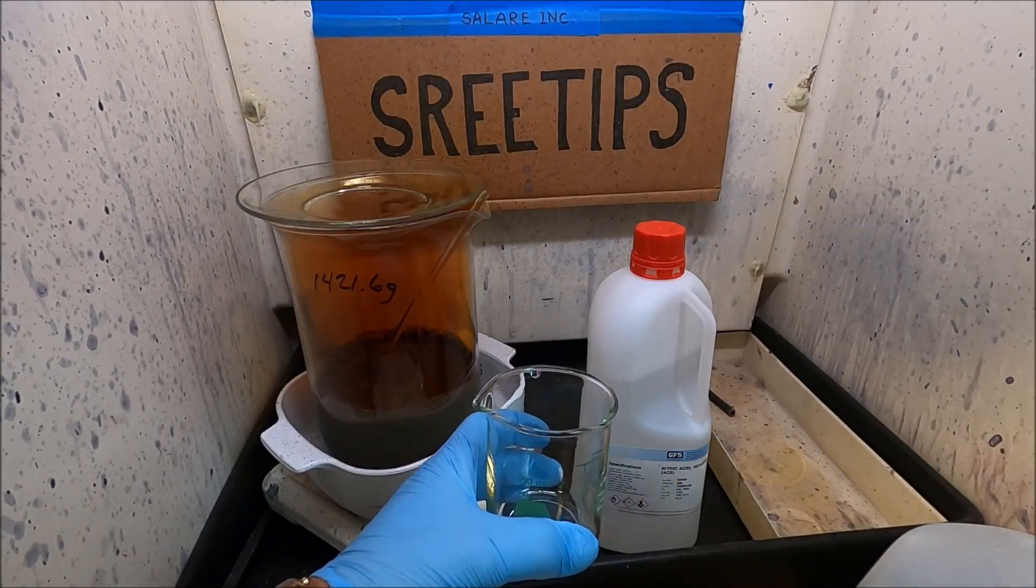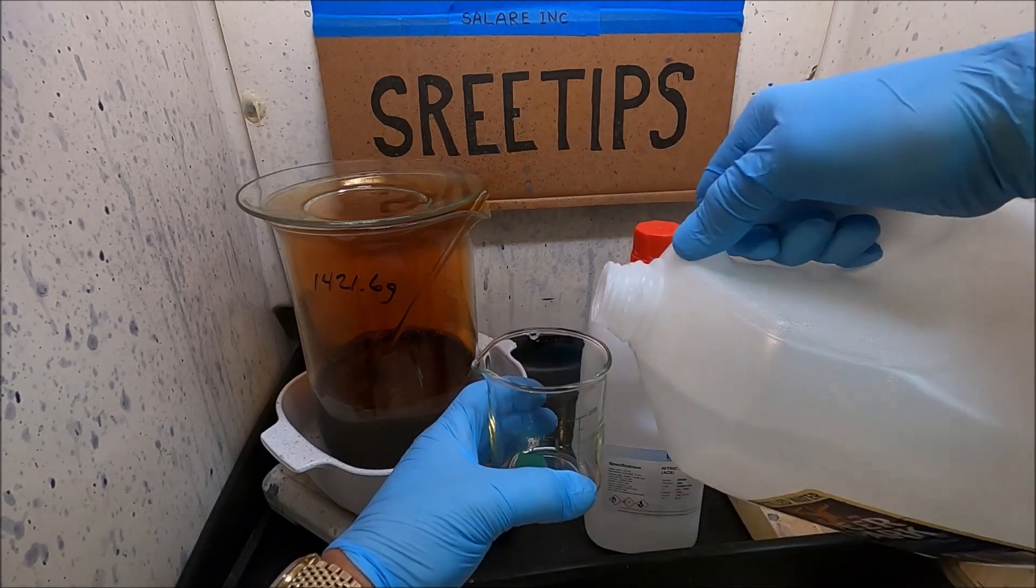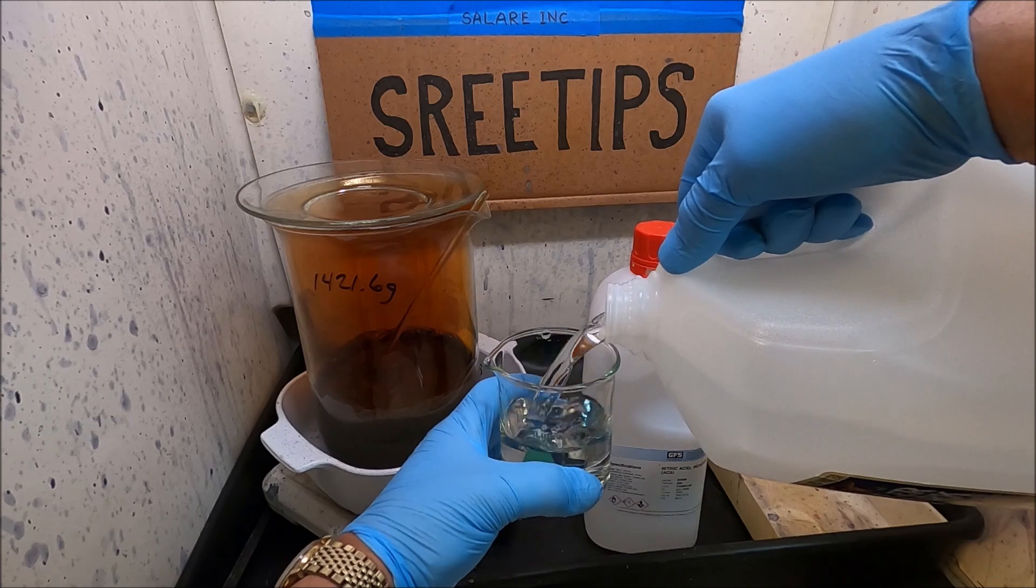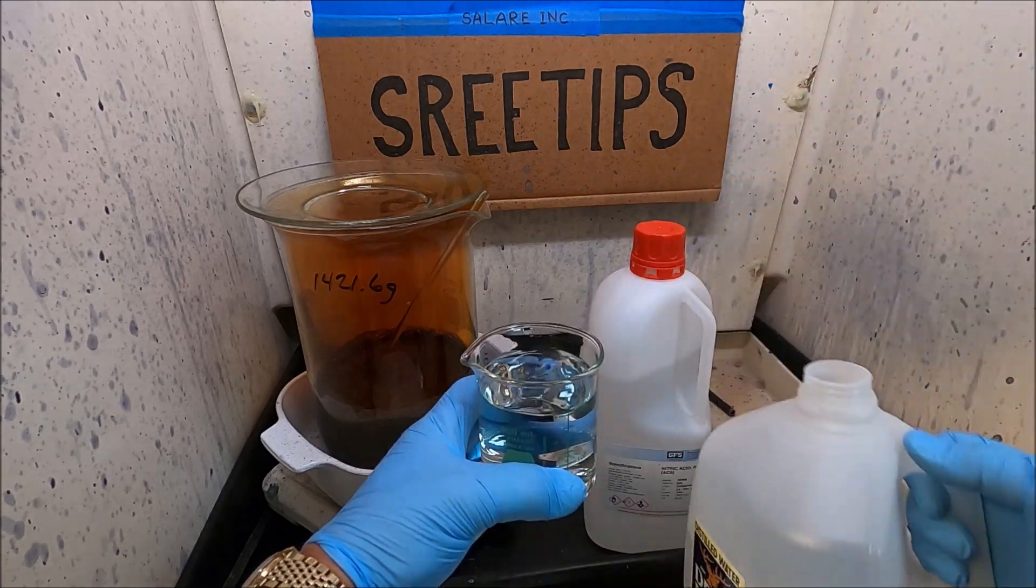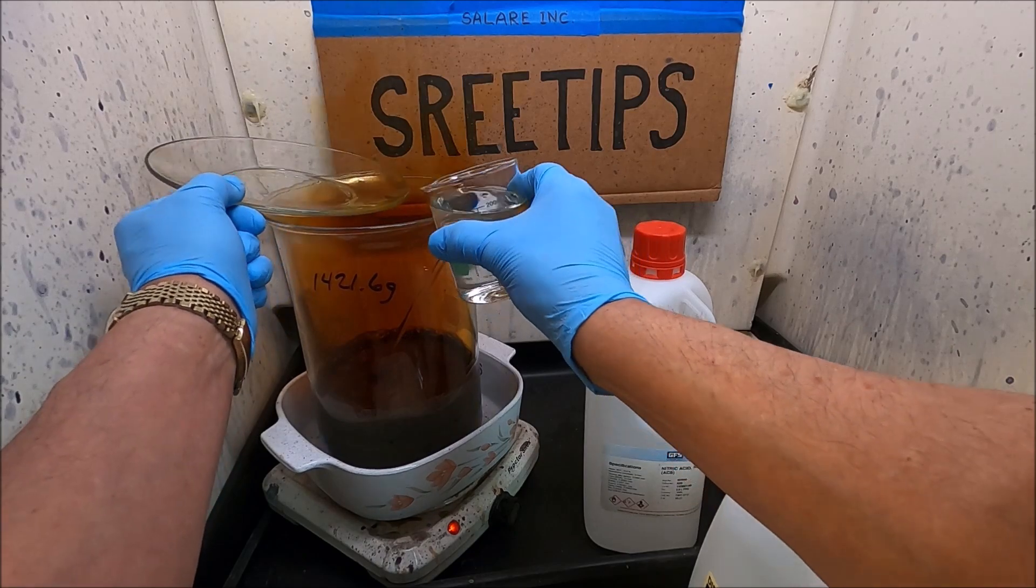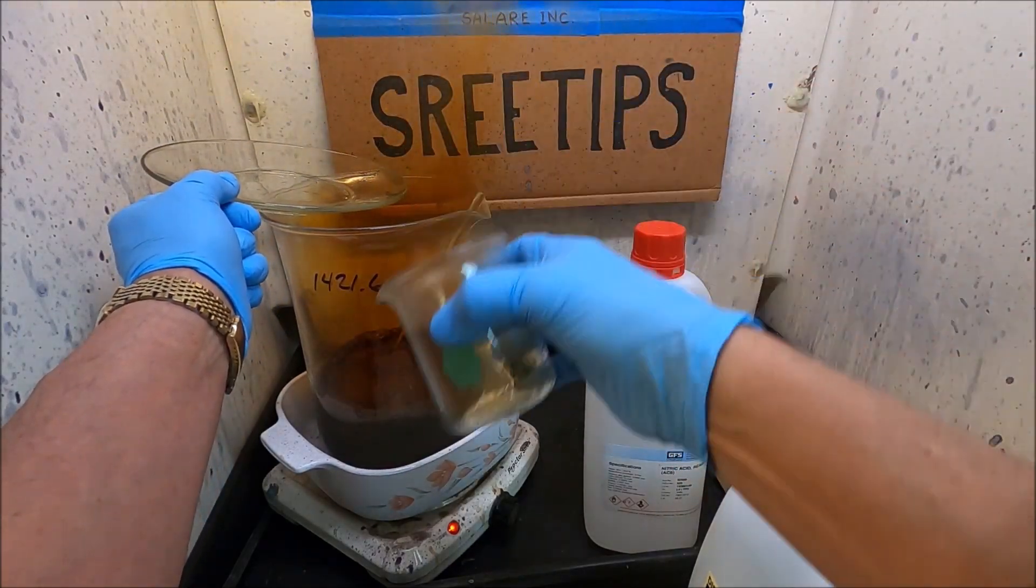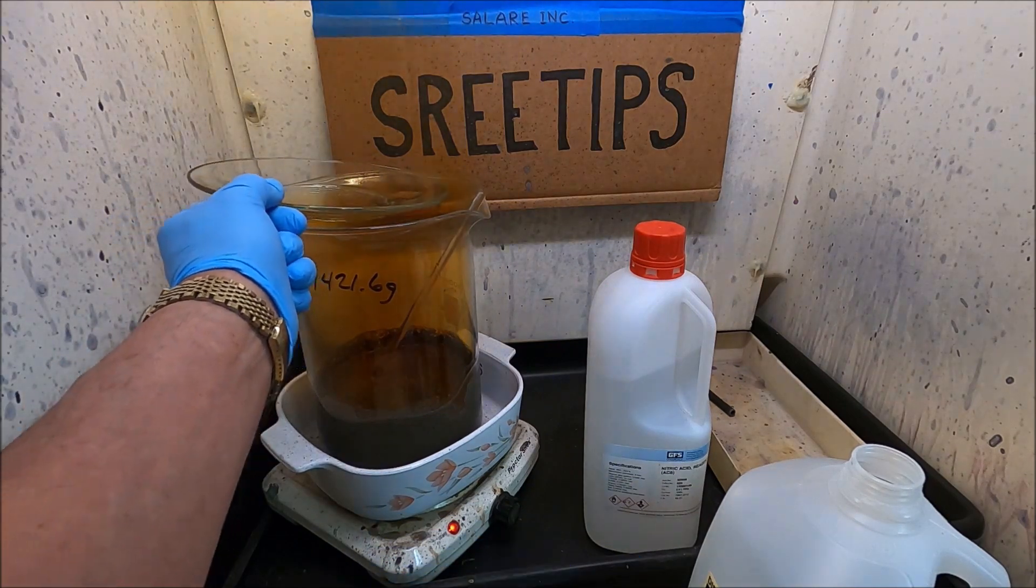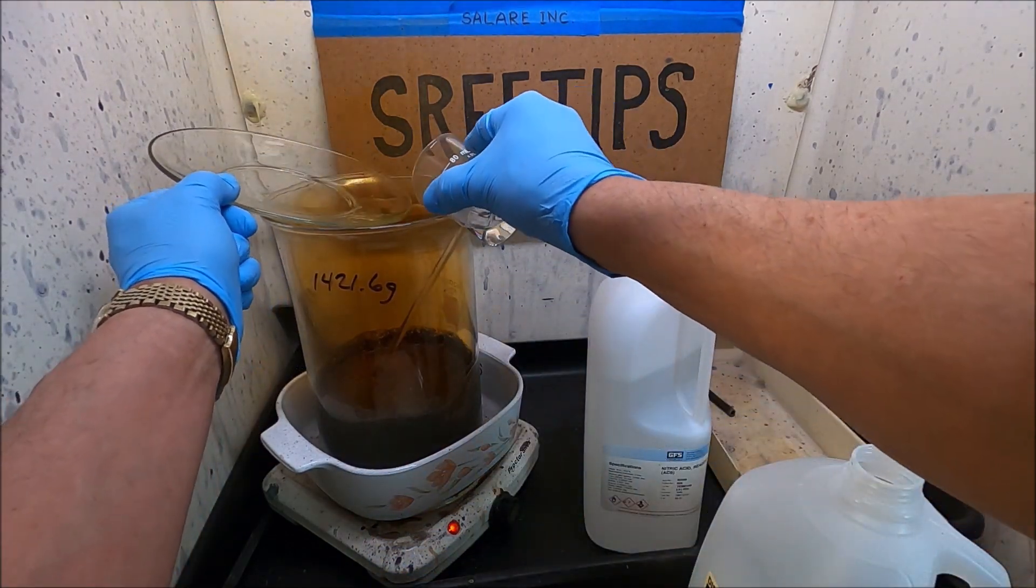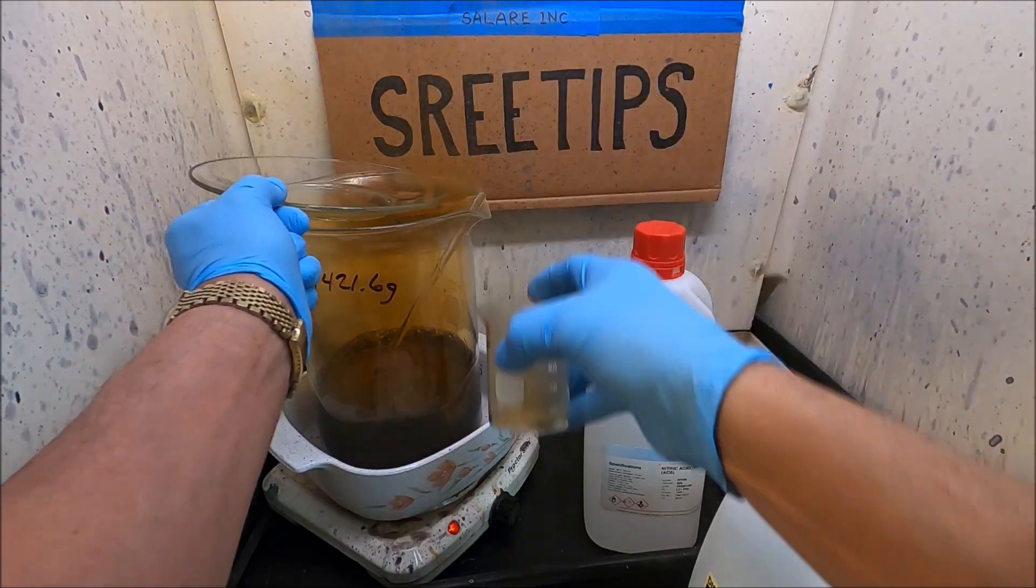Just added that nitric. I'm going to put a little bit of distilled water in, 200 milliliters here, just so we can hydrate the reaction here, make sure we got some place for those metals to go as they dissolve. Now I'm going to add the rest of the nitric here and we'll let this cook.